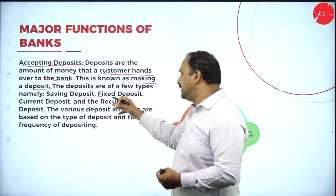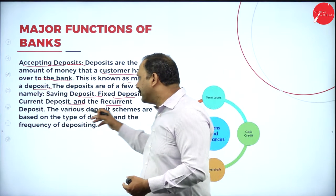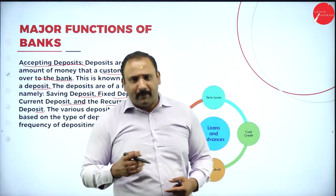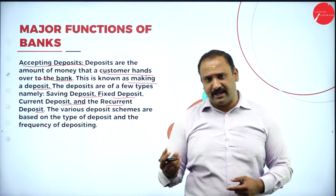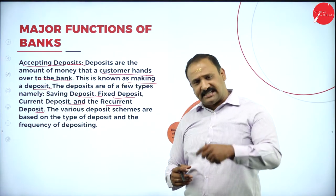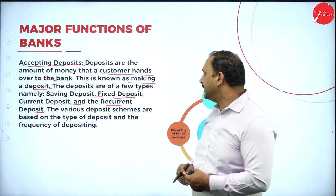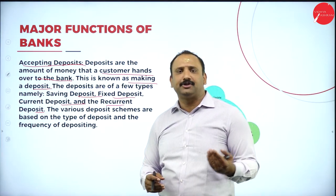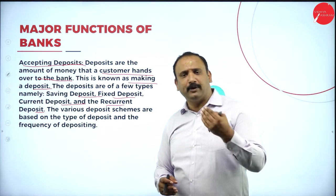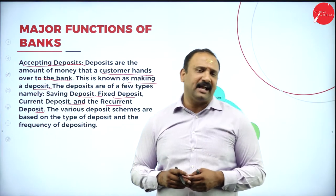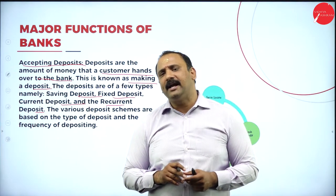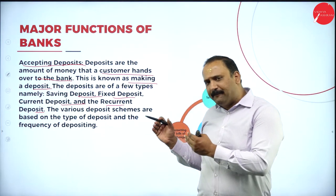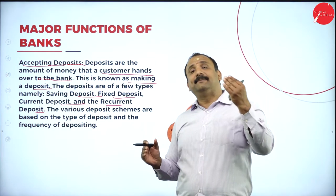Deposits are of many types. A savings deposit and a fixed deposit could be for a longer time period, while a current deposit is for a shorter, more recent time period. A recurring deposit is one where you keep putting in money on a monthly or fixed-time basis. The bank attracts customers to come and hand over money so it can collect from consumers and rotate it back in the market.